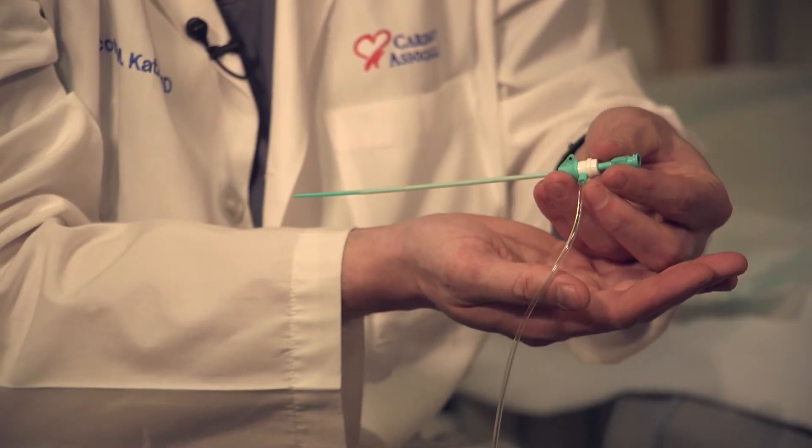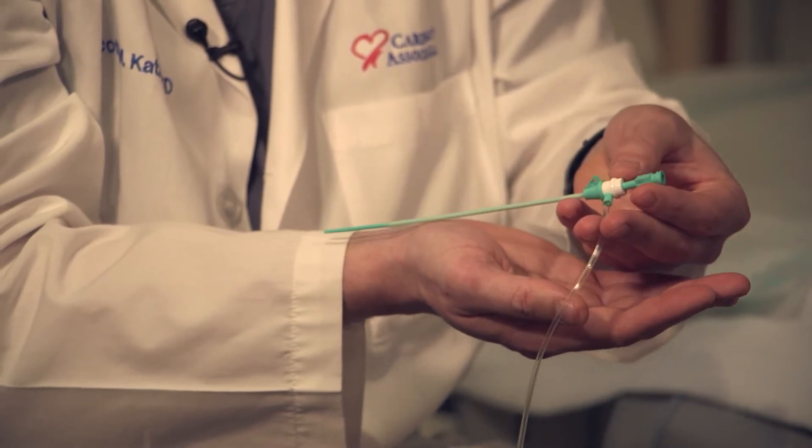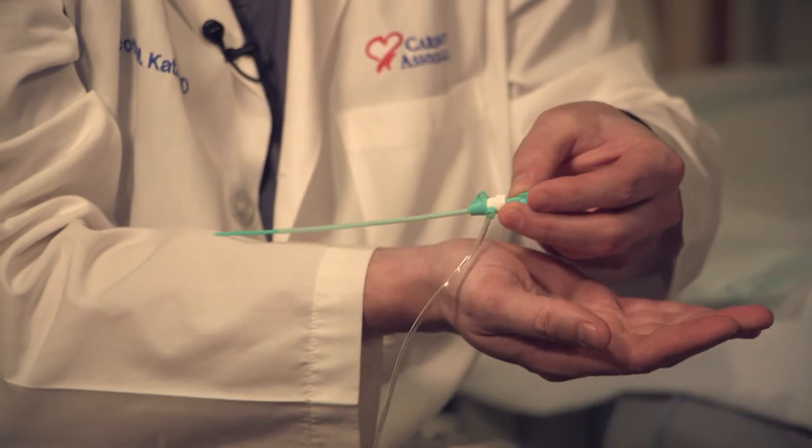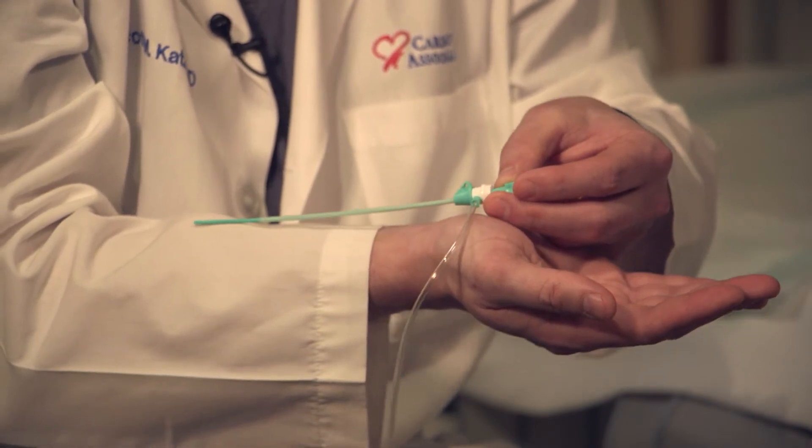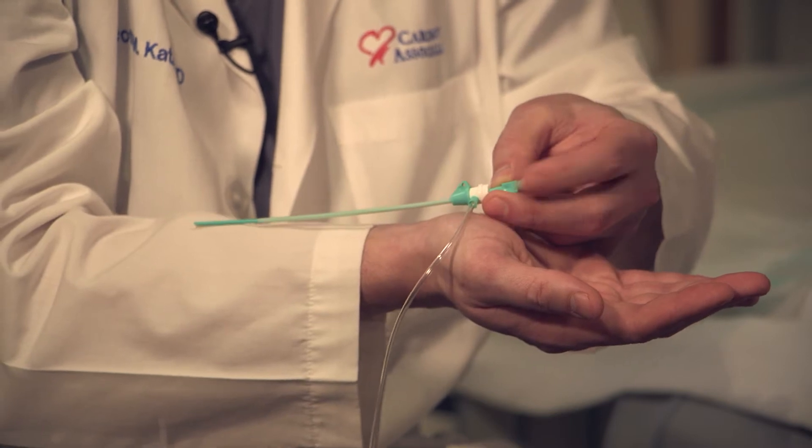This first piece of equipment, once we have the patient sedated, is called a radial sheath. It's a small tube that goes inside the radial artery, and this is where we can pass all of our equipment to get up to the heart and do what we need to do. So this is piece of equipment number one.